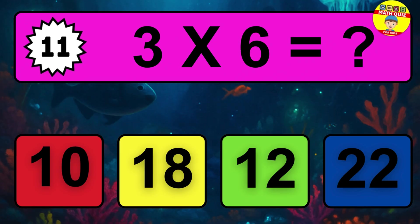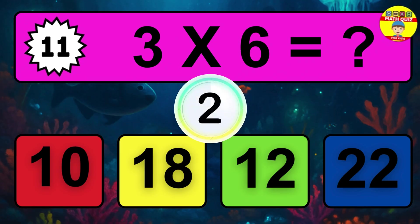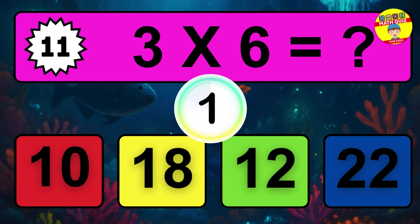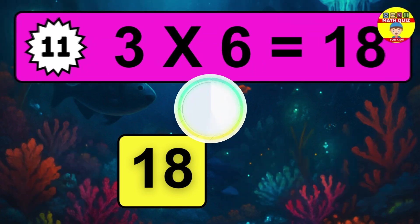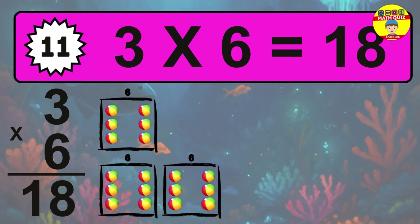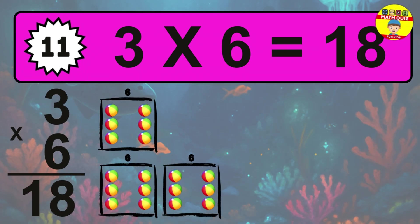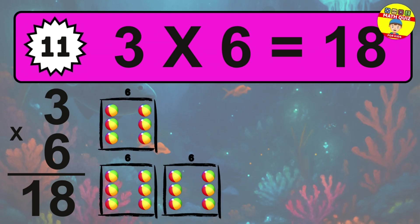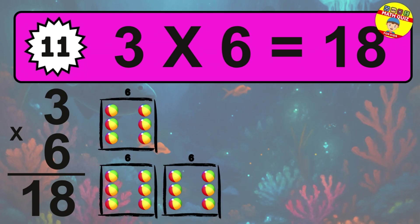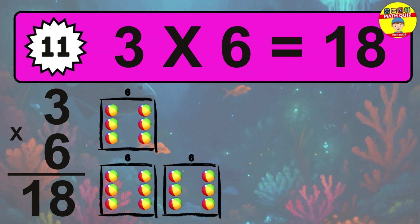Question 11. Three times six equals what? The answer is three times six is 18. To calculate, we have three groups with six balls each one. So how many balls do we have? Eighteen balls.